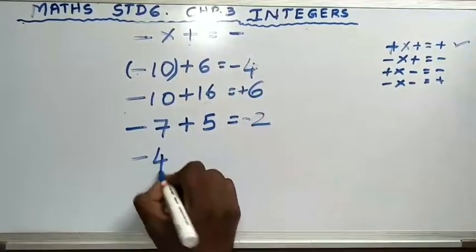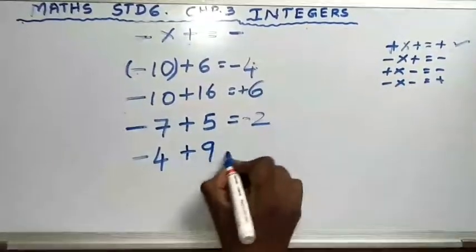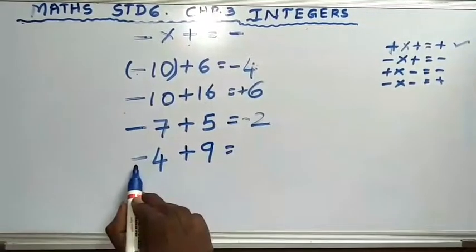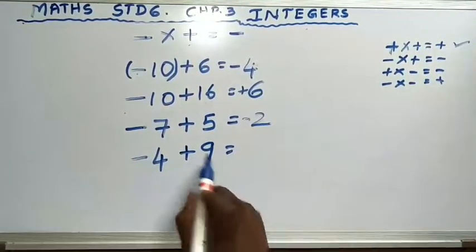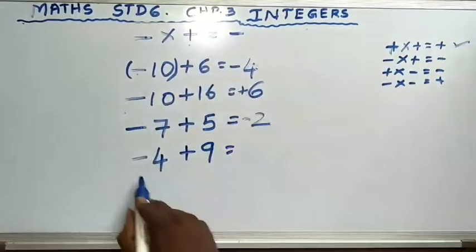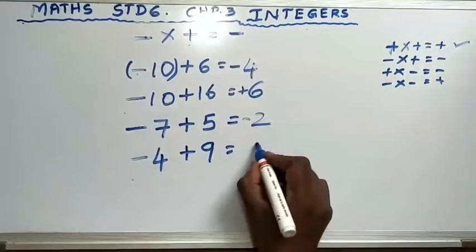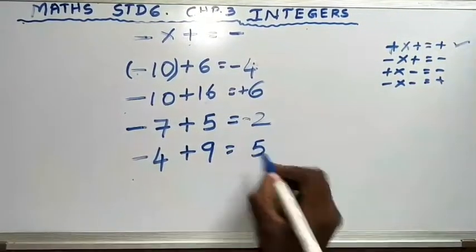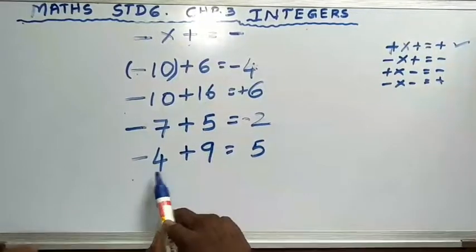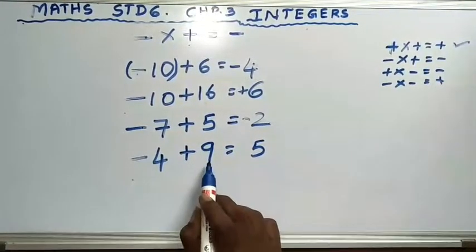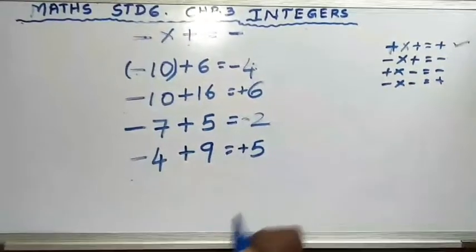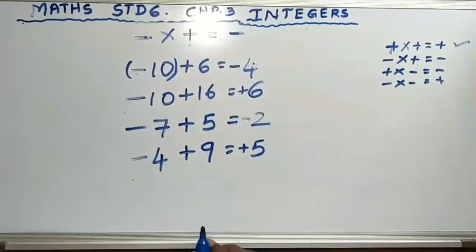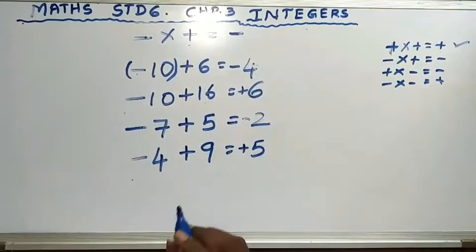Minus 4 plus 9: left side minus, right side plus — so minus into plus means subtract. 9 minus 4 is 5. Which number is greater: 4 or 9? 9 is greater, and 9 has a positive sign, so write plus 5.